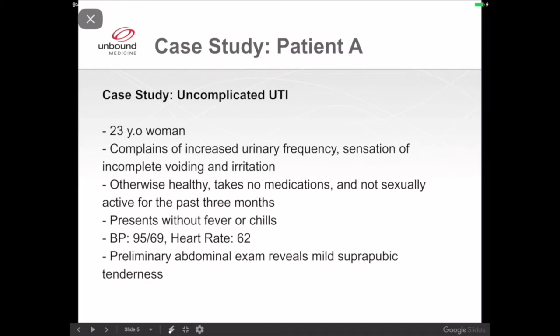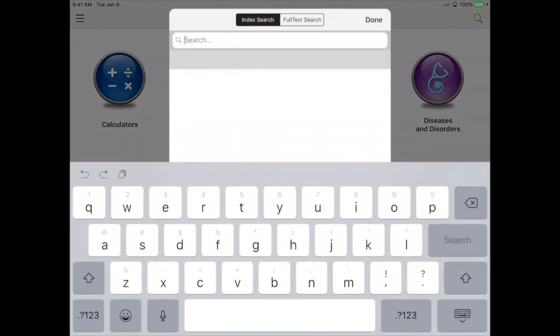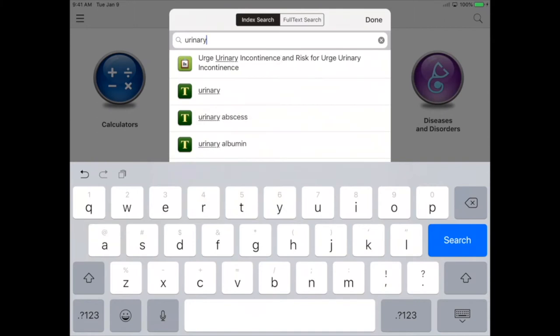Right now I'm going to walk you through a clinical scenario. In school, you'll be reviewing case studies or working with patients, and you may be asked to create care plans. Here we have our case study: a 23-year-old woman complaining of urinary frequency, sensation of incomplete voiding, and irritation. She's otherwise healthy, not taking any medication, not sexually active. Her preliminary abdominal exam reveals mild suprapubic tenderness. Let's go back to Nursing Central and begin searching with a full-text search. We'll type in urinary frequency.